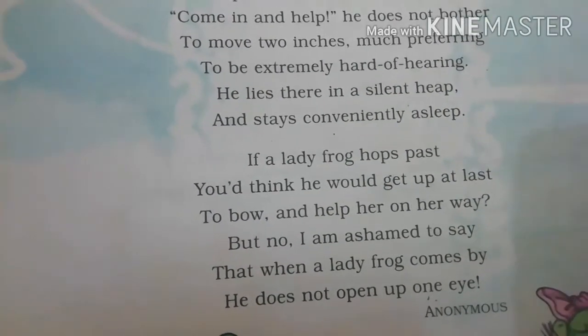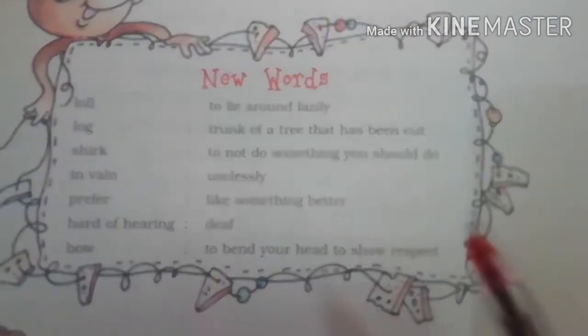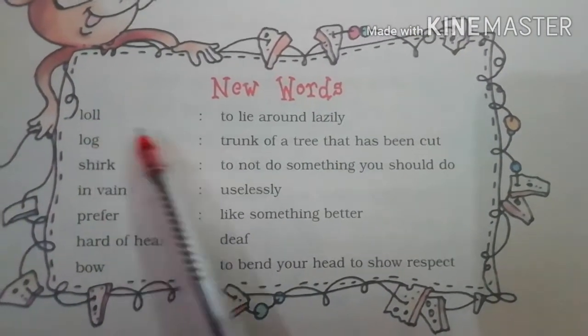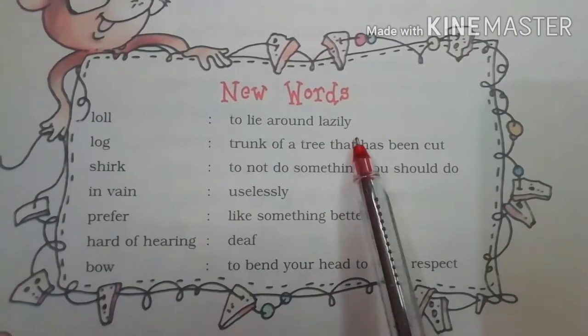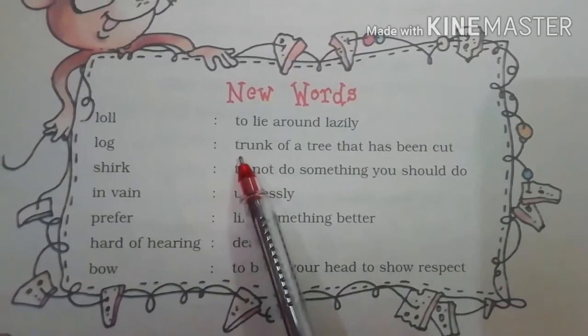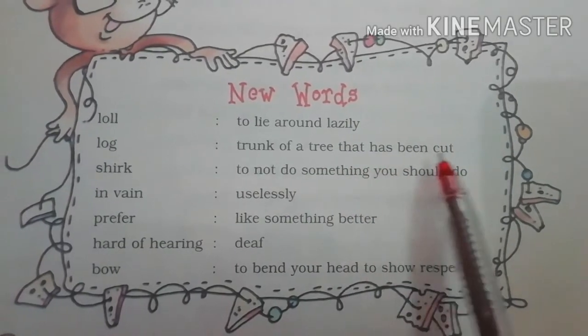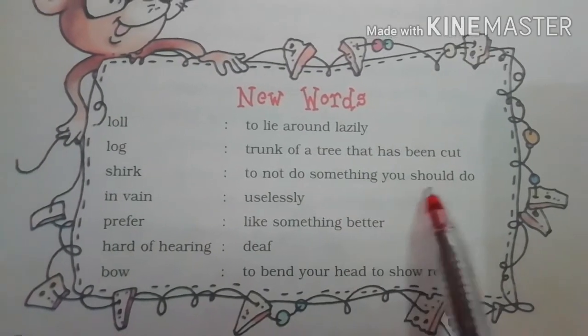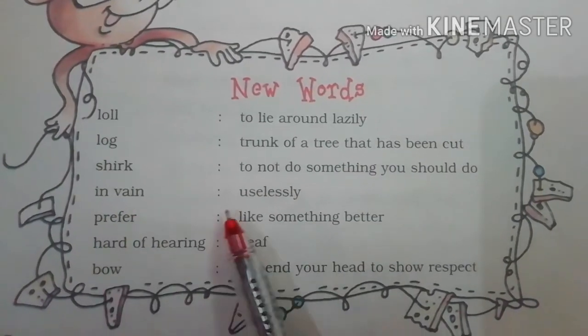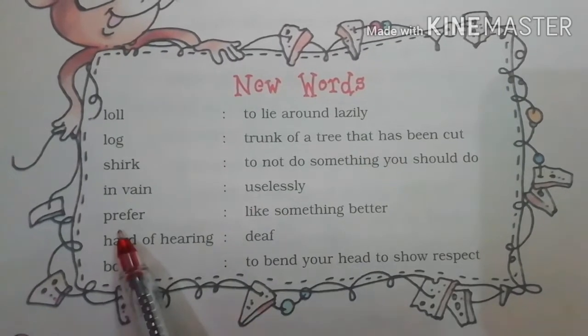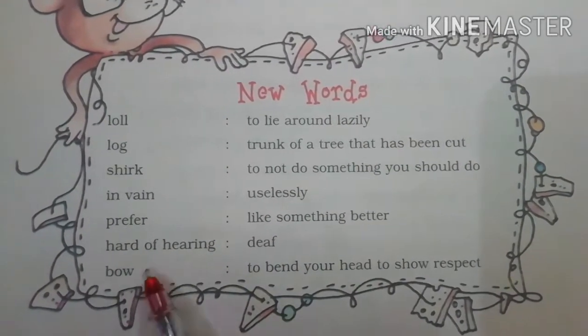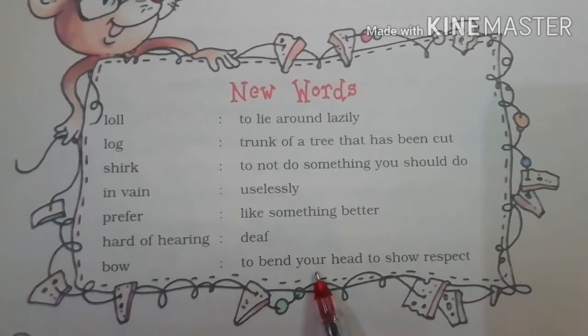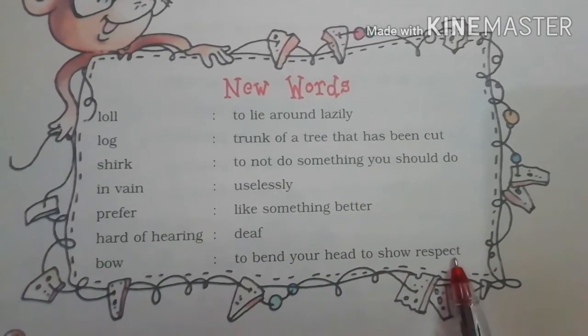Now let's talk about some new words from the poem. Write down the poem and these new words in your notebook. Loll — to lie around lazily. Log — trunk of a tree that has been cut. Shrug — to not do something you should do. In vain — uselessly. Prefer — to like something better. Hard of hearing — deaf. Bow — to bend your head to show respect.